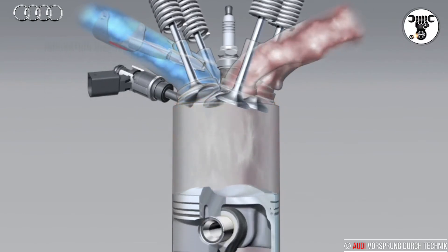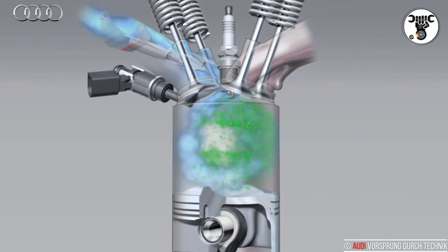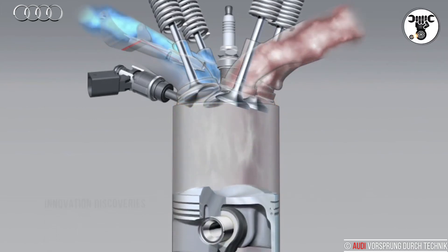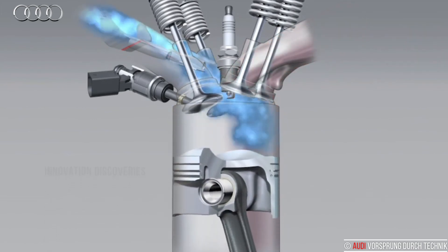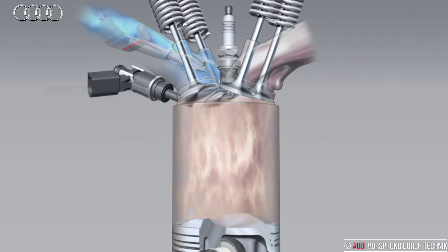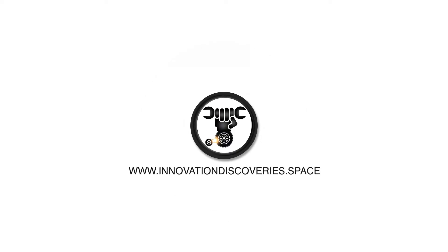In the new 3.0 V6 TDI, Audi has replaced the individual flaps in the intake ports with a single flap at the entrance to the intake manifold. This new solution reduces intake losses and saves weight.